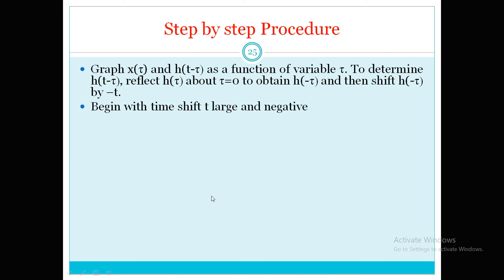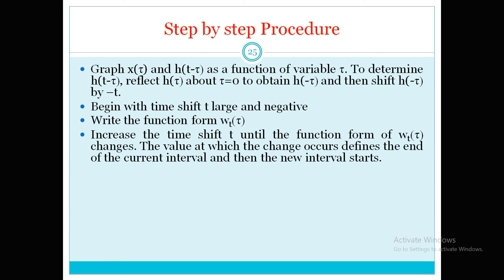We begin with time shift t large and negative — that means at the leftmost side — and we move our signal towards the rightmost side. We write the function w_t(τ) and increase the time shift t until the form of w_t(τ) changes. The value at which the change occurs defines the end of the current interval and the start of the new interval. Our x(τ) is somewhere in the graph, and we keep moving the green color signal to the right.